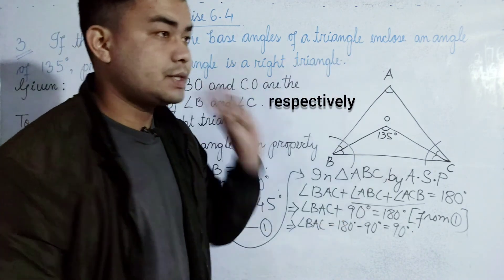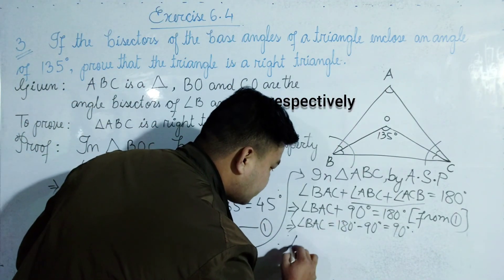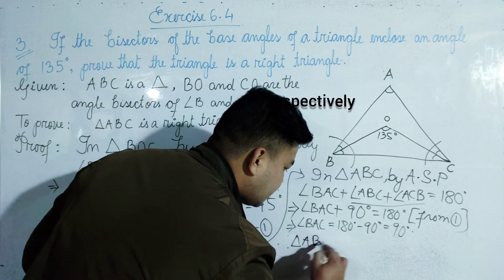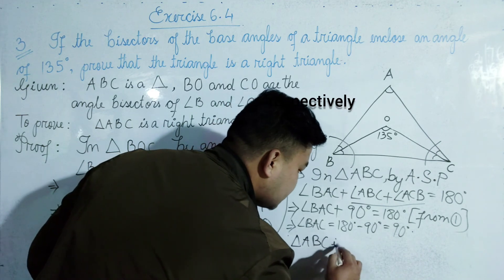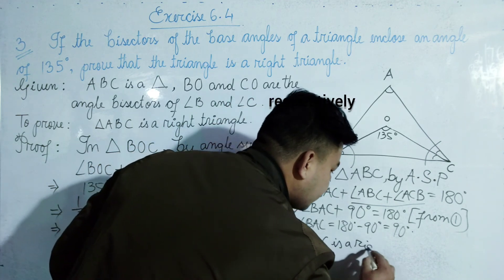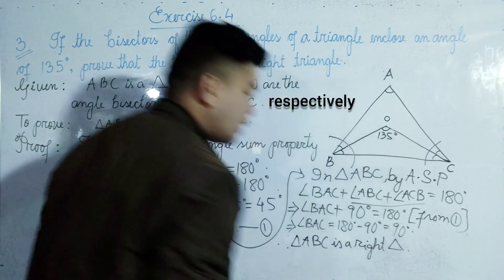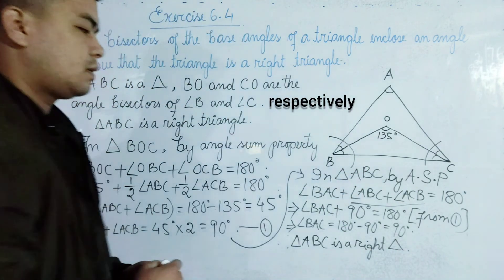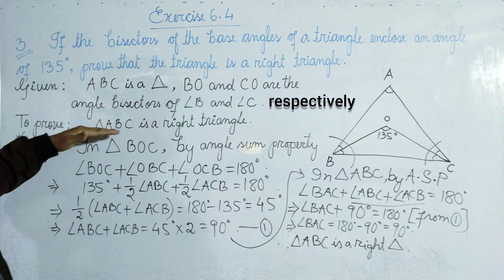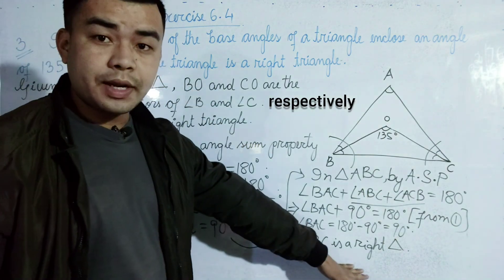Therefore, triangle ABC is a right triangle. Hence proved.